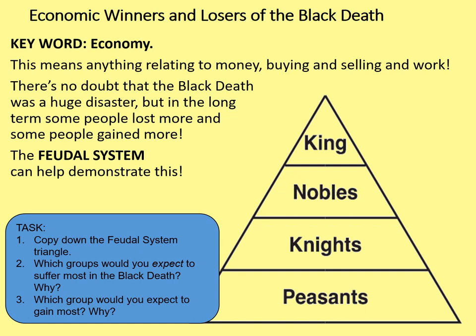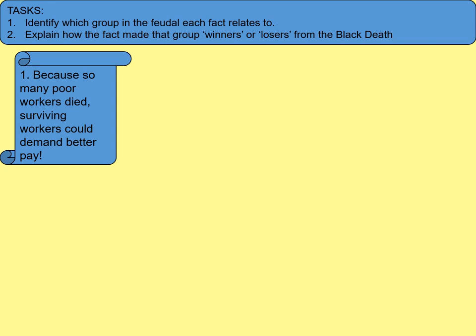Perhaps you'd expect the king and nobles to benefit most from the Black Death and the peasants to lose out most. Often in disasters it's the poorest in society that tend to weather it least well. But given that the peasants made up the majority of the country, that wasn't the whole picture. On screen you'll see a series of consequences of the Black Death. Your task is to identify which group of the feudal system each fact relates to and explain how it made them winners or losers. Let's do the first one together: because so many poor workers died, surviving workers could demand better pay. That one relates to the peasants — and if they survived and are now getting better pay, they're winners. Number two: nobles found that their wealth did not protect them and some noble families died or lost all their wealth. That relates to the nobles, and they are losers, since noble families that relied on passing belongings from one generation to the next would sometimes die out altogether.